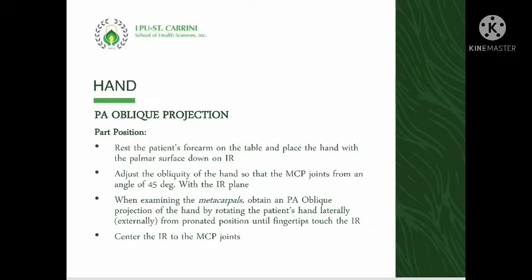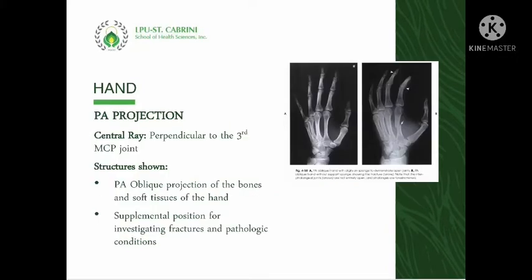For the hand PA oblique projection, the forearm of the affected side is rested on the table and the hand is placed with the palmar surface down in contact with the image receptor. This projection can be performed either with the use of a sponge wedge for opening up the joint spaces, or without, to place the hand's metacarpal phalangeal joints at 45 degrees obliquity with the IR plane. To examine the metacarpals, obtain a PA oblique projection by rotating the patient's hand laterally from the pronated position until the fingertips touch the IR, placing the metacarpal phalangeal joints in the center of the IR.